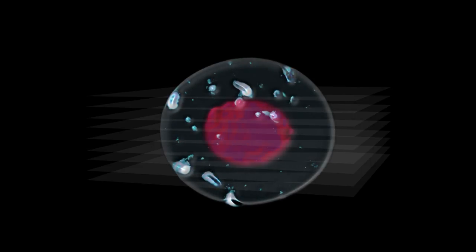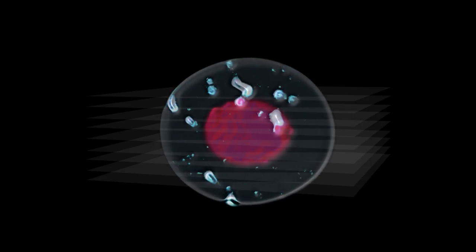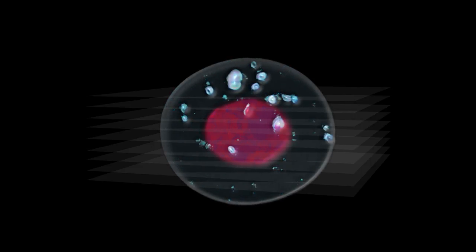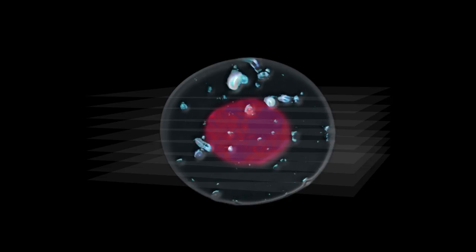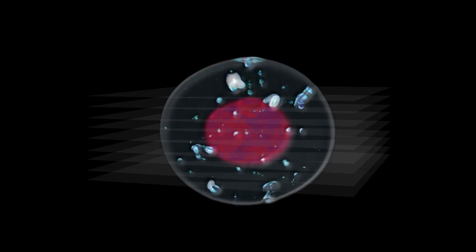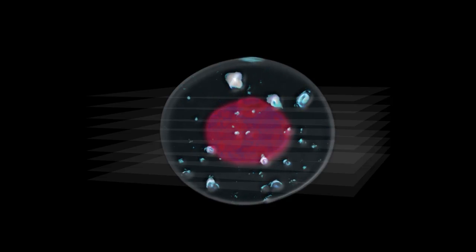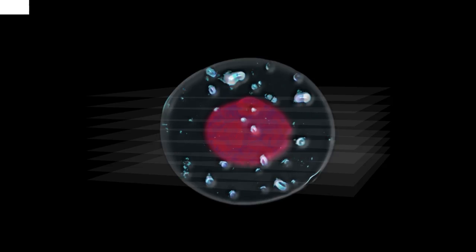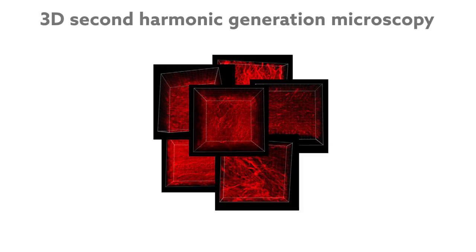2D images can be stitched together to create 3D images, which provide scientists with a more detailed look at tissues. However, even when combined, these images still leave out a lot of potentially valuable information. To capture these crucial additional details, the team gathered 3D images from the start using a technique called 3D second harmonic generation microscopy.